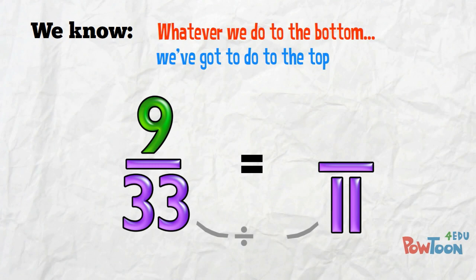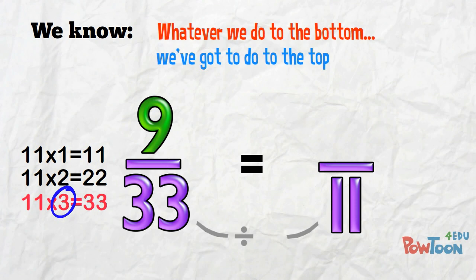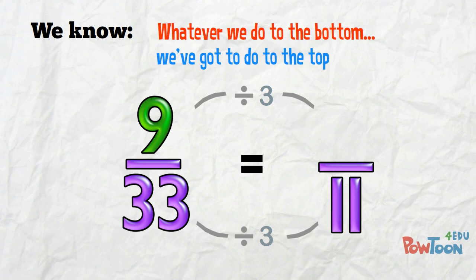Use the 11 times table to find out. 3 elevens are 33. We're dividing by 3. Do the same to the numerator then. 9 divided by 3 is 3.